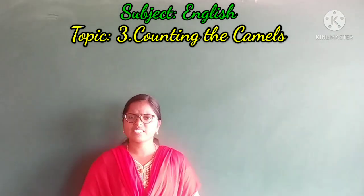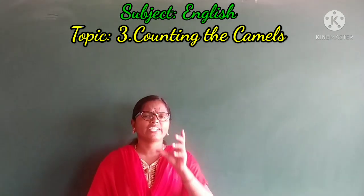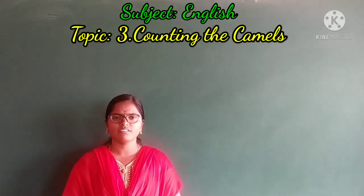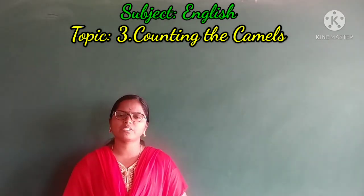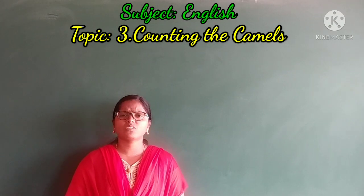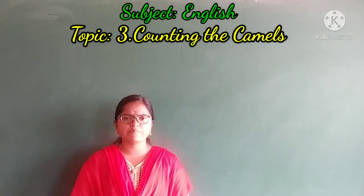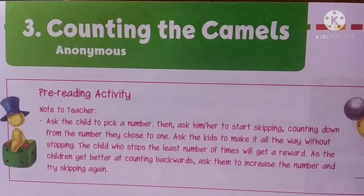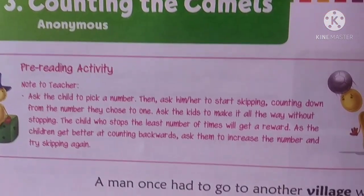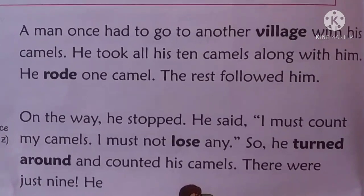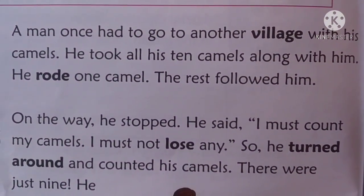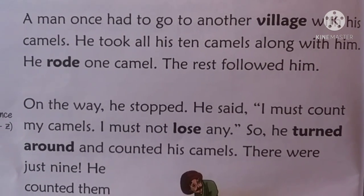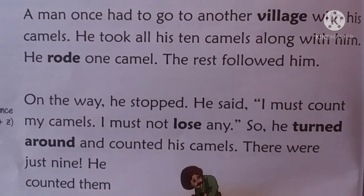Dear students, now you have learned some interesting words. You can underline all these interesting words in your textbook and practice today. Now everyone open your textbook and open page number 28, because I am going to read this lesson. Observe the comma, full stop, question mark, and exclamation mark. Lesson number 3: Counting the Camels. A man once had to go to another village with his camels. He took all his 10 camels along with him. He rode one camel. The rest followed him.